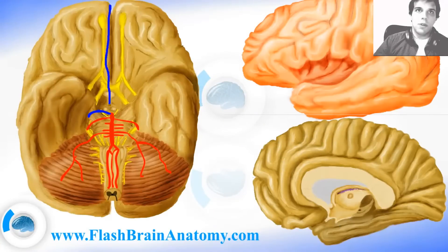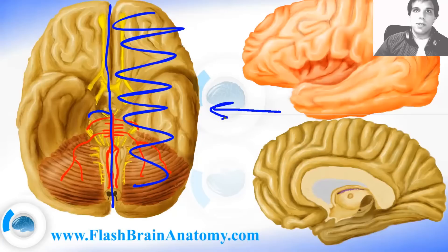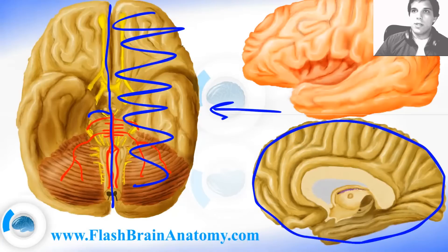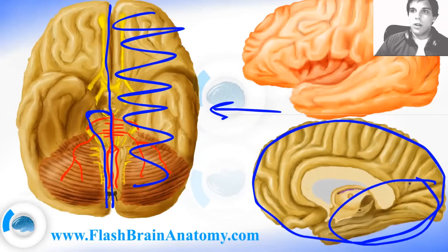If we cut this part of the brain out and look from this side, we're going to see something like this. I will illustrate exactly how this artery goes — it goes over here — and I will illustrate each branch and artery that comes from the posterior cerebral artery.